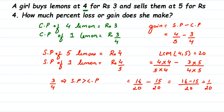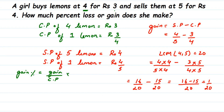Now we find the gain percentage. Gain percentage equals gain divided by cost price, multiplied by 100. The gain is 1/20 and the cost price of one lemon is 3/4, so gain percentage = (1/20) ÷ (3/4) × 100.